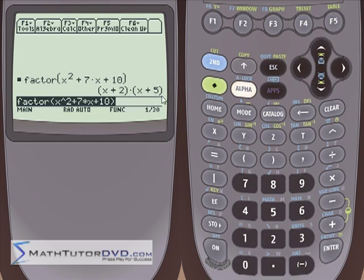x plus 2 times x plus 5, which is what we expect. x times x gives us x squared, 2 times 5 gives us 10, the inside terms is 2x and the outside terms are 5x, so those add to 7x.